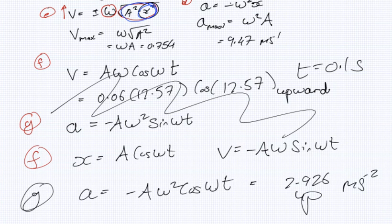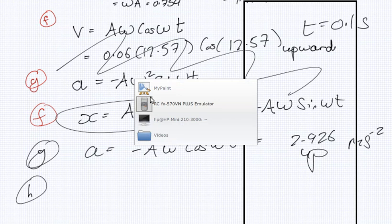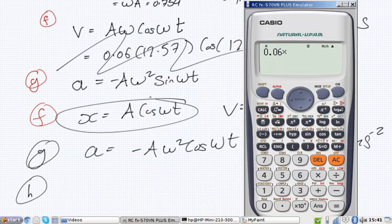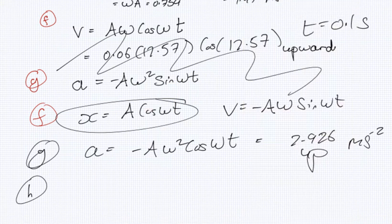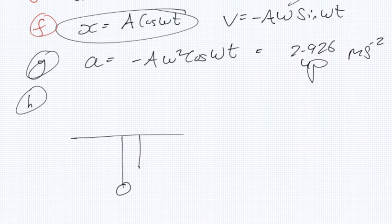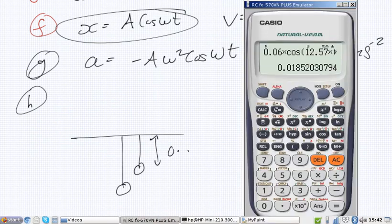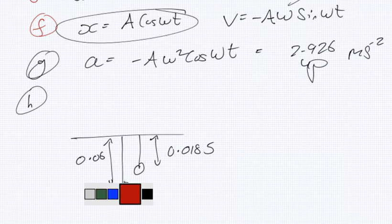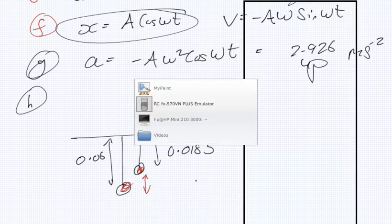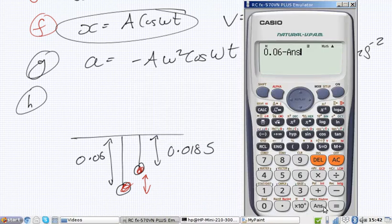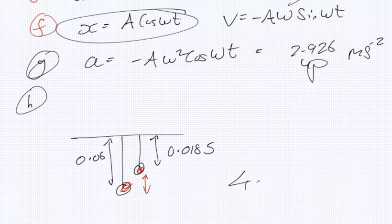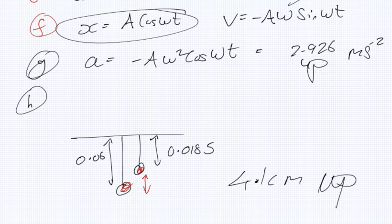How far has the bulb moved after one second? So by using this formula now, 0.06 times cos 12.57 times T, so that's 0.0185. So what's happened here, at this distance is 0.0185, but it started off with 0.06. So the distance it's moved will be the difference between the two, which is 4.1 centimeters. It's moved up 4.1 centimeters then.